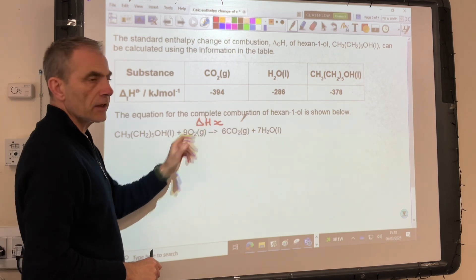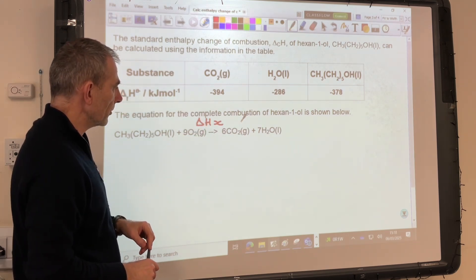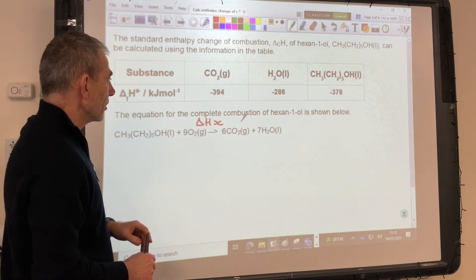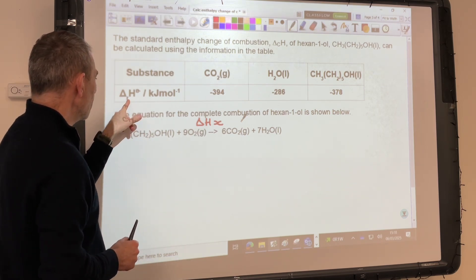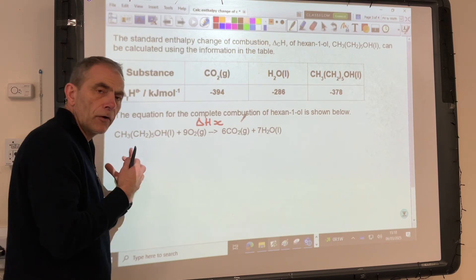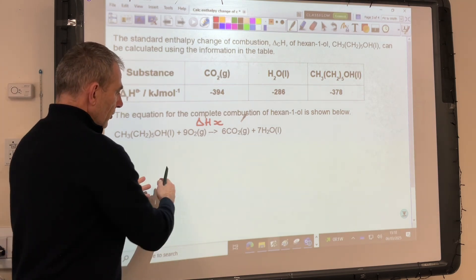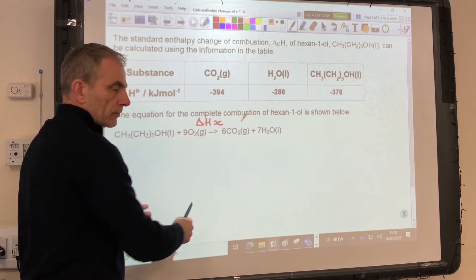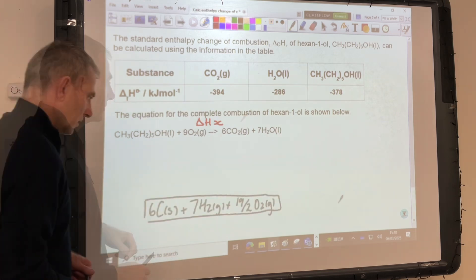So I'm just calling the enthalpy change for the reaction that we want delta Hx. So because we're using formation values, enthalpy changes of formation, we've got to draw a formation cycle. So we need a box at the bottom for the elements to live in.